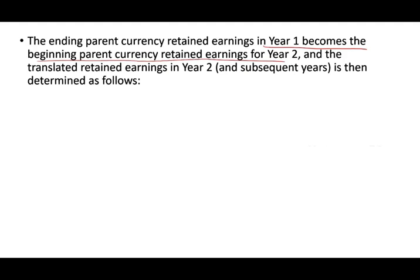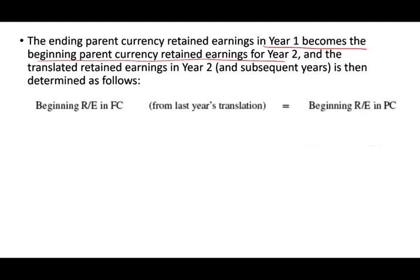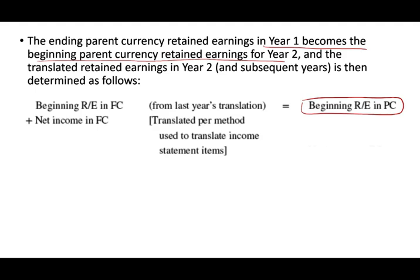And the translated retained earnings in year two is then determined as follows. We have the beginning retained earnings in the foreign company from last year's translation, and we translate that into beginning retained earnings in the parent company. Then we go through the same process — net income in the foreign company, translated per the method we are using, either current or temporal.